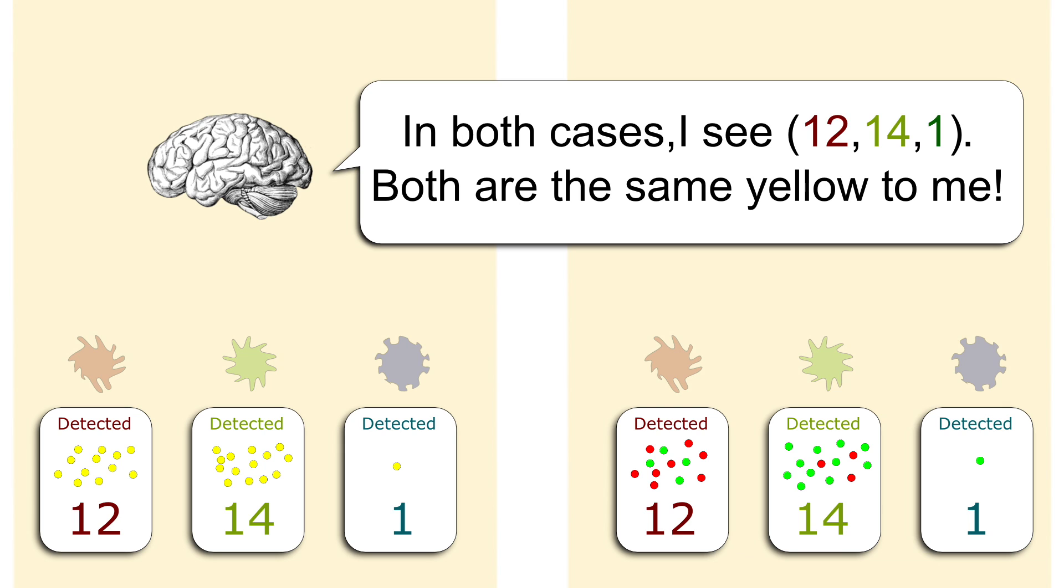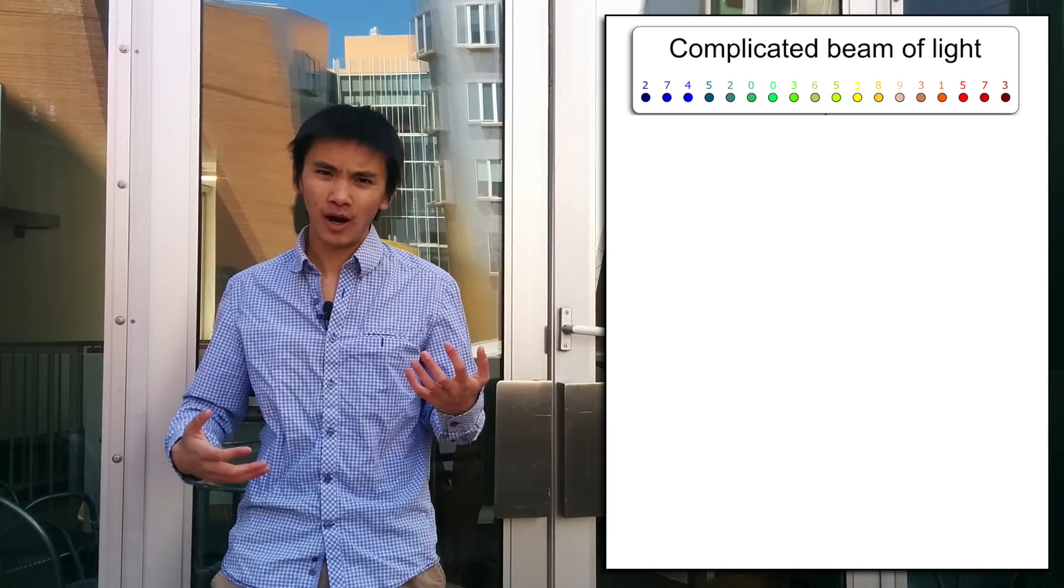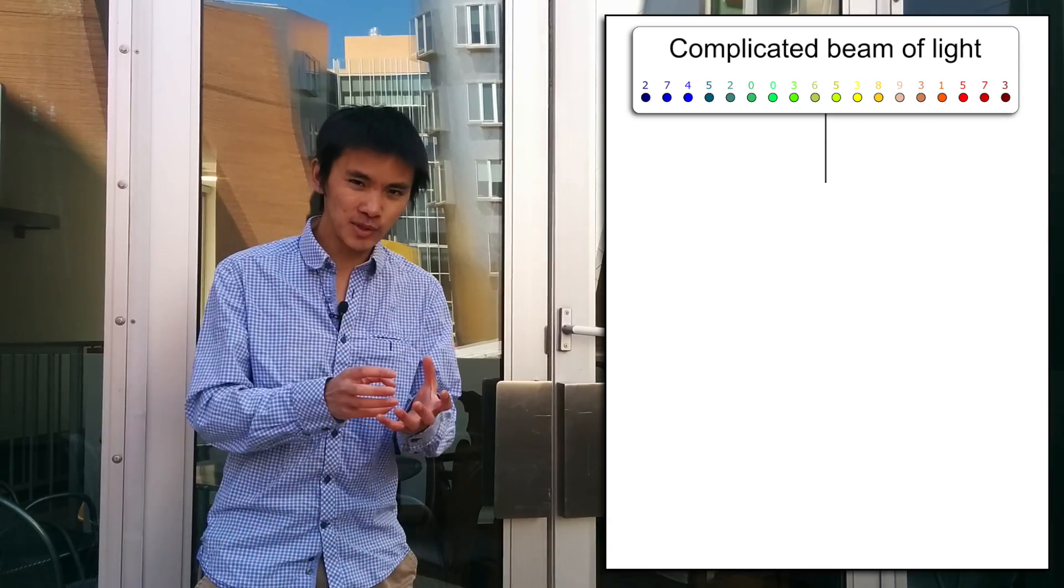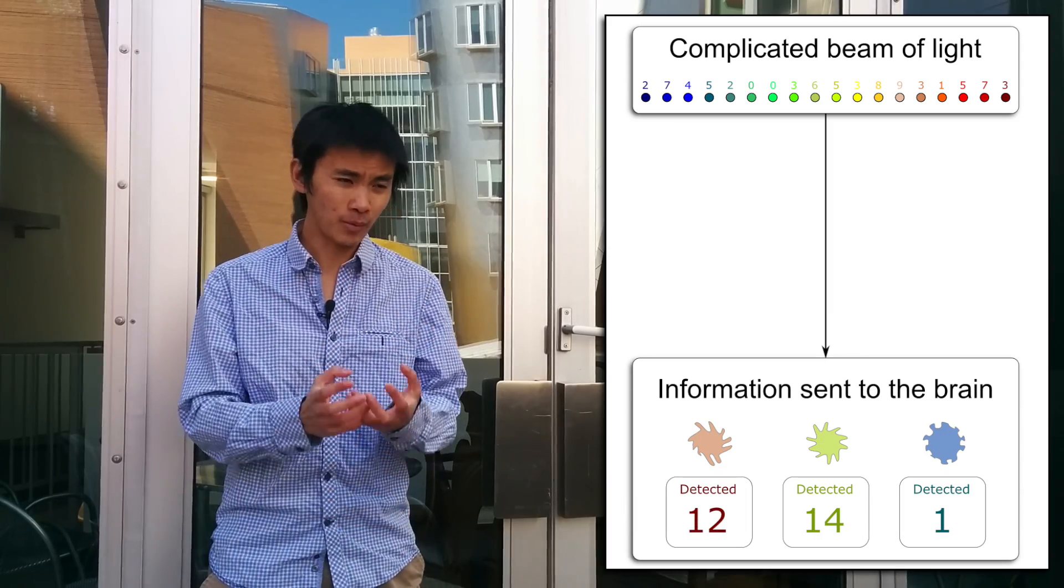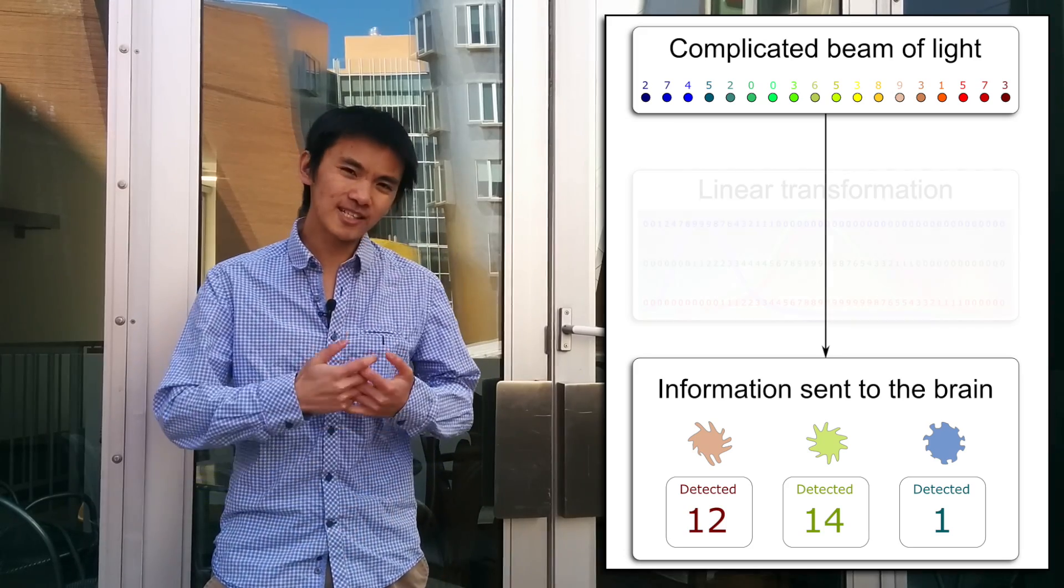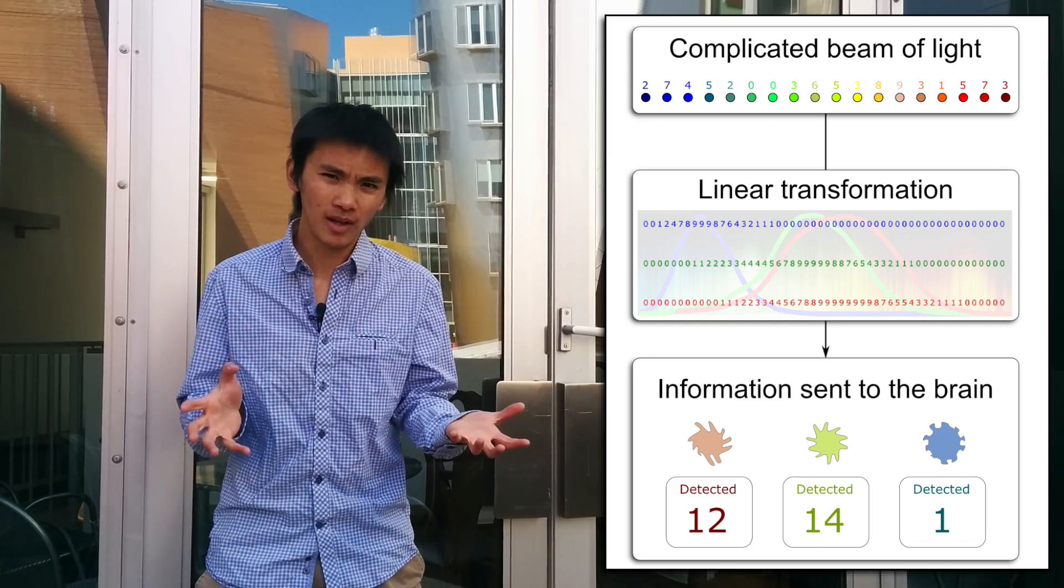Our brains cannot discern yellow photons from a combination of red and green photons. What's happening in your eye is basically that the complexity of the infinite dimensional vector that describes the color of the light beam that enters your eye is reduced to this three dimensional vector with only three numbers. This is called a projection, and it's a linear projection because it only consists in adding up the number of photons in a right way.